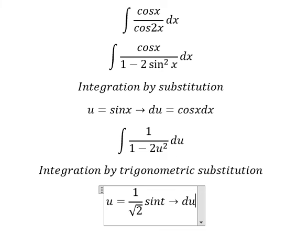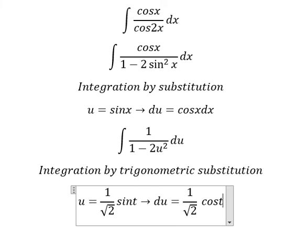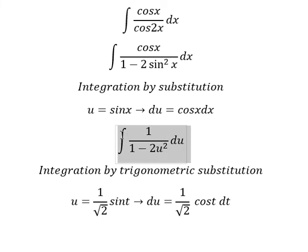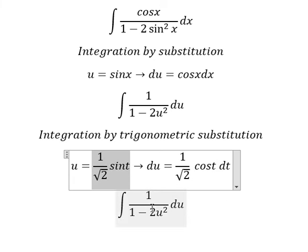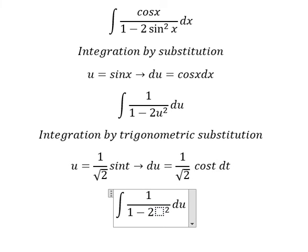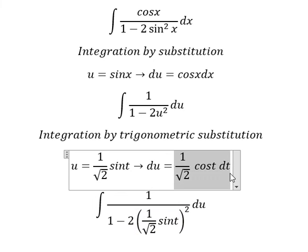We differentiate both sides and we have 1 over the square root of 2 cos t dt. So we put this one in here. Du we change for this one.